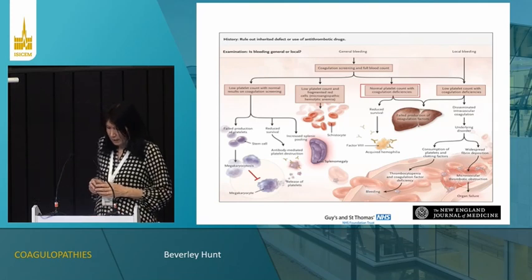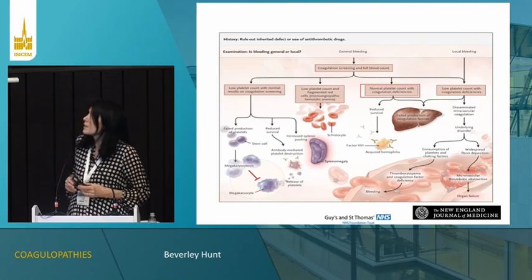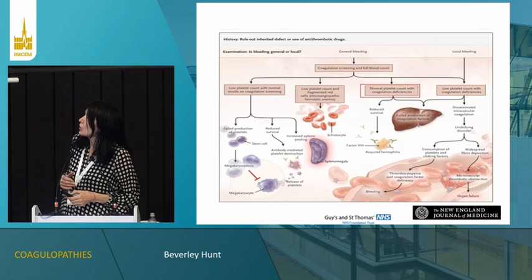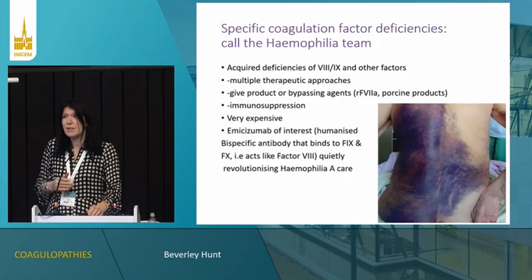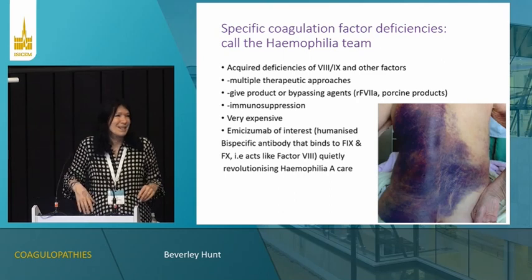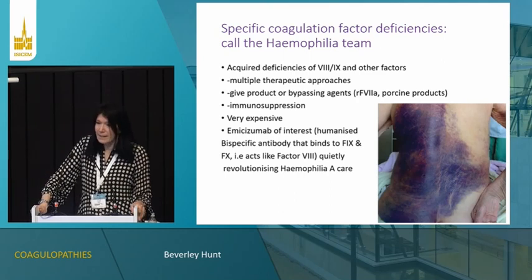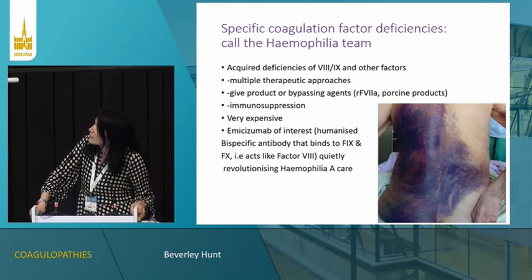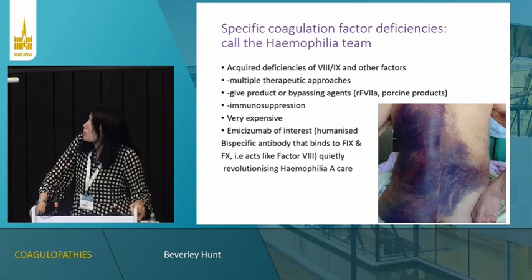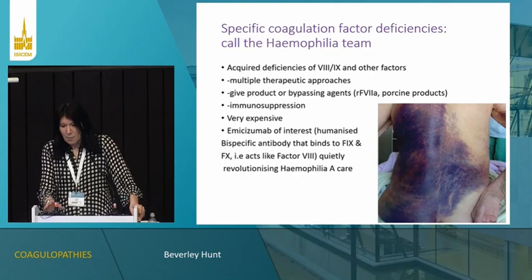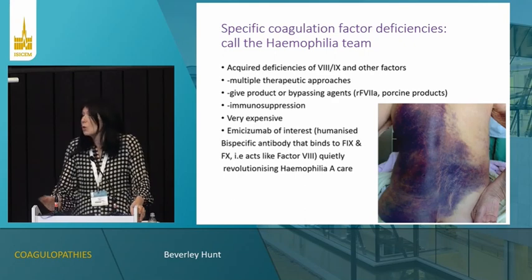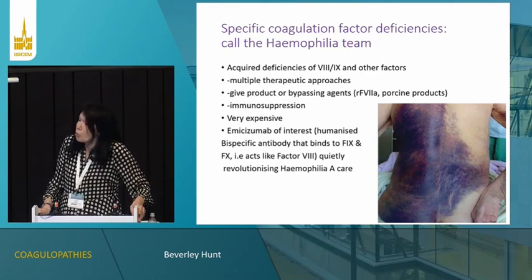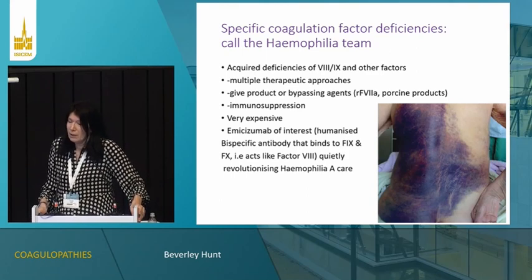Moving on: in patients with normal platelet counts and abnormal coagulation, my message is hand it over to the haemophilia team. If you've got an isolated deficiency of a coagulation factor, they are the best people to deal with it — they have all the experience, a huge number of patients with inherited problems, and access to all the products and the know-how.